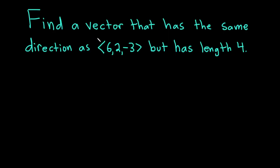In this video, we're going to find a vector that has the same direction as the vector <6, 2, -3> but has length 4. Let's go ahead and carefully work through the solution. To solve this problem, we're going to start by turning this vector into a unit vector — a vector whose length is 1 — and then we're just going to multiply by 4 and we'll be done.